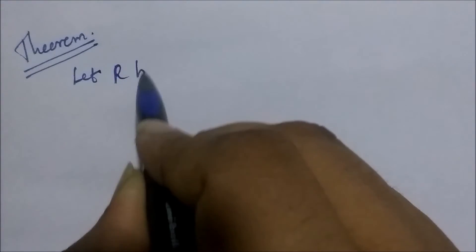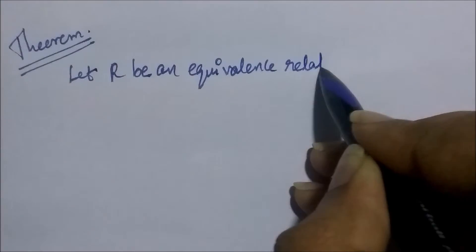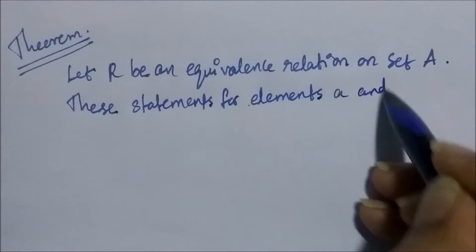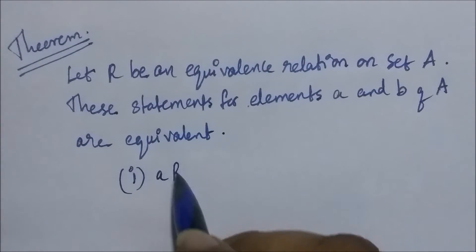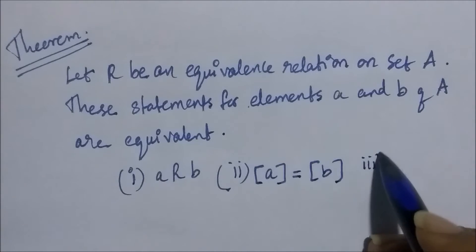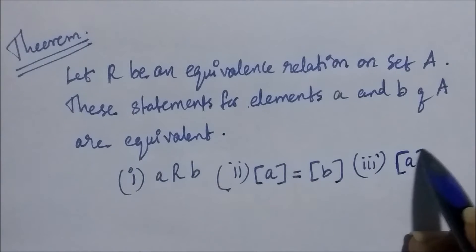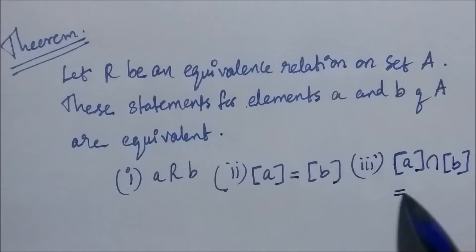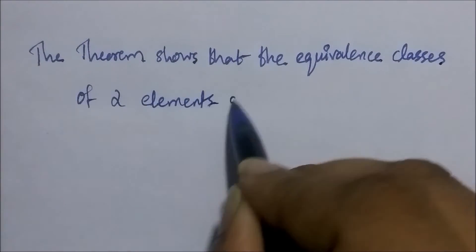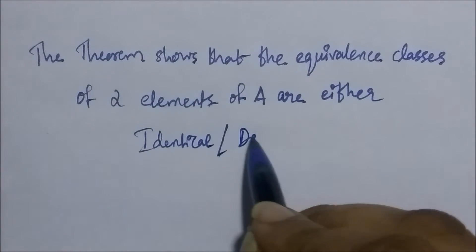Let's prove a theorem to make our discussion more precise and formal. The theorem states: let R be an equivalence relation on set A. The following statements for elements small a and small b of capital A are equivalent: (1) A is related to B; (2) the equivalence class of A equals the equivalence class of B; (3) the equivalence class of A intersected with the equivalence class of B is not empty. Basically this theorem shows that the equivalence classes of A are either identical or disjoint.